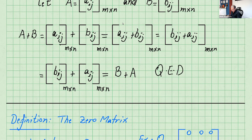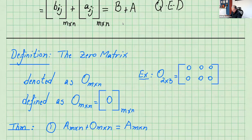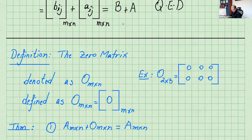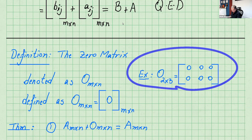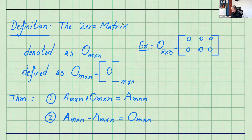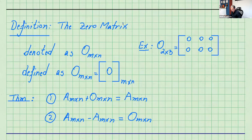Next, we're going to talk about the zero matrix. The zero matrix is denoted as 0 subscript m by n. For example, 0 two-by-three is a two by three matrix where all the entries are zeros. In compact form, you write it as the zero entry, meaning all entries equal zero, and it's an m by n matrix.